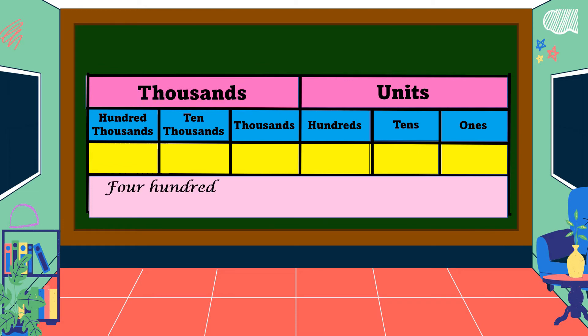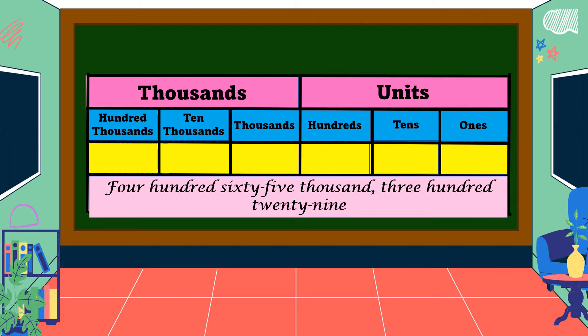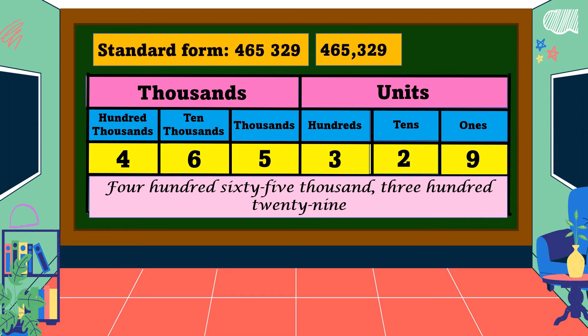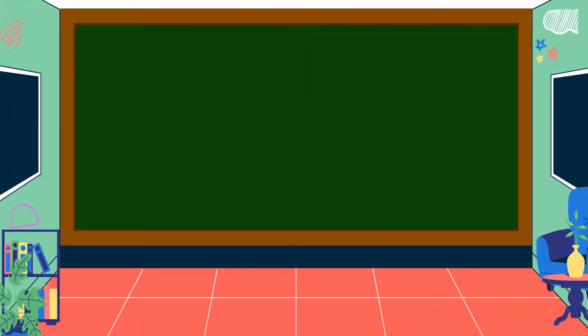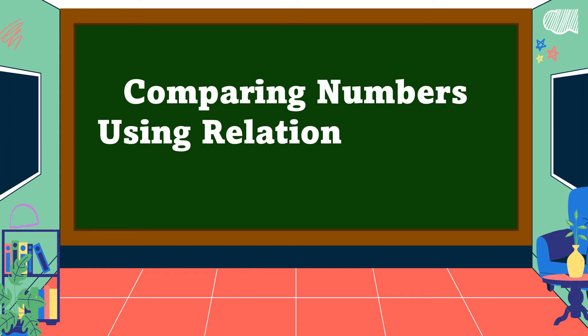Another example: 465 thousand, 329 — write this number in standard form. You can pause this video and write your answer, then we will check. The standard form of 465 thousand, 329 is 465,329.